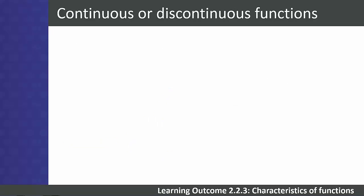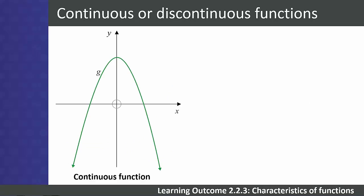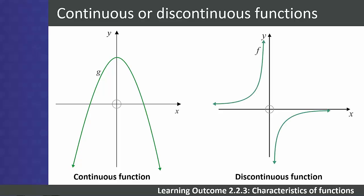Students need to describe whether a graph is continuous or discontinuous. An unbroken line represents a continuous graph — one you could draw without lifting your pencil, like a parabola. A graph is discontinuous if there is a break somewhere along it. A hyperbola, for example, is not a continuous function because it is not defined at zero.